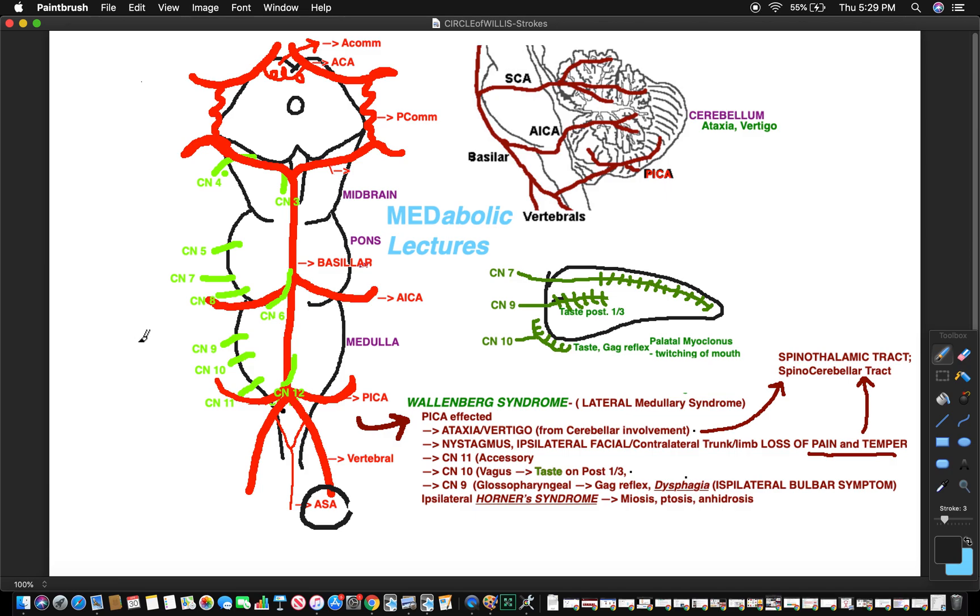Welcome to metabolic lectures. We're going to carry on the topic from last time - we were talking about strokes and the different types of syndromes involved with the brain stem and the circle of Willis. Today we're going to talk about Wallenberg syndrome.